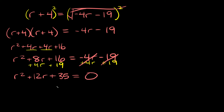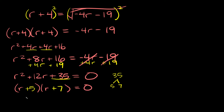We have a quadratic, so we need to factor it. r squared splits into r times r. We need two numbers that multiply to 35 and add to the middle coefficient positive 12 — that would be positive 5 and positive 7, since 5 times 7 is 35 and 5 plus 7 is 12. So we factor it as r plus 5 times r plus 7 equals zero. Setting each factor to zero: r plus 5 equals zero gives r is equal to negative 5.